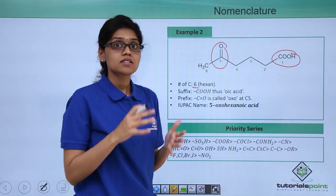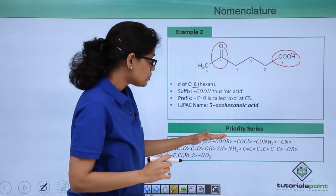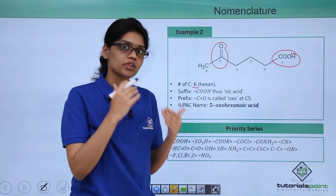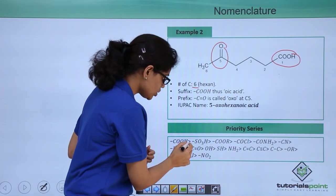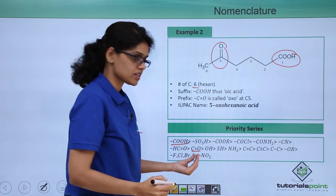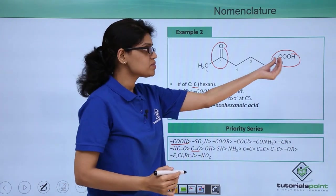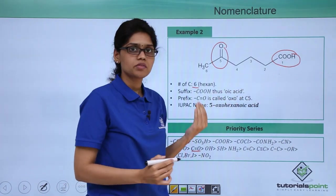We know that COOH has the highest priority based on the priority series of functional groups. So we can see COOH is here whereas C double bond O is here and this will have the highest priority and therefore numbering will be done from that side.